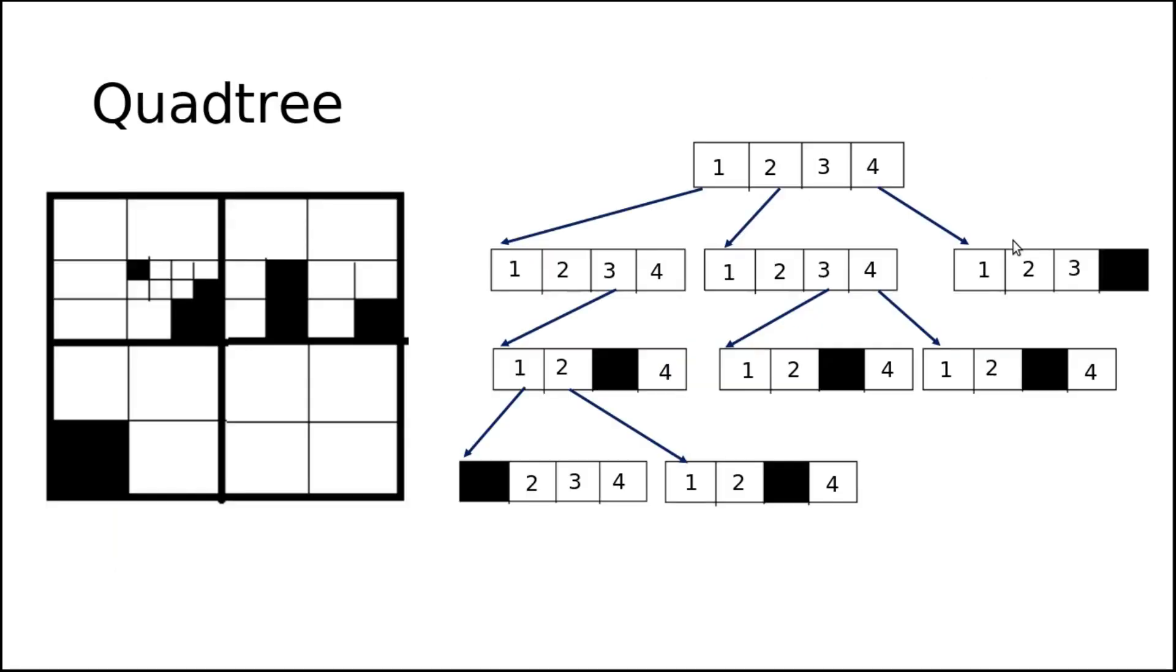The next method is quadtree. Quadtree is for two-dimensional representation. The 2D space is divided into four equal parts. Based on that division, you can represent this as a tree structure.